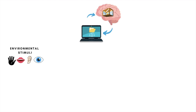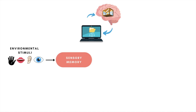According to this model, the process of memory storage begins when we first come across information from outer environmental stimuli and perceive and encode it via our sensory routes. This recently perceived and encoded information then directly reaches the first stage in the multi-store model, which is the sensory memory stage.